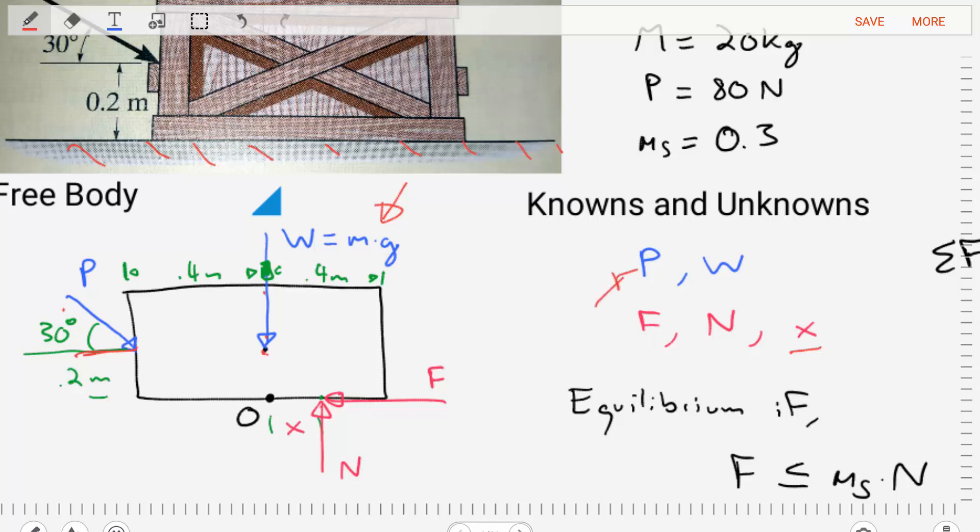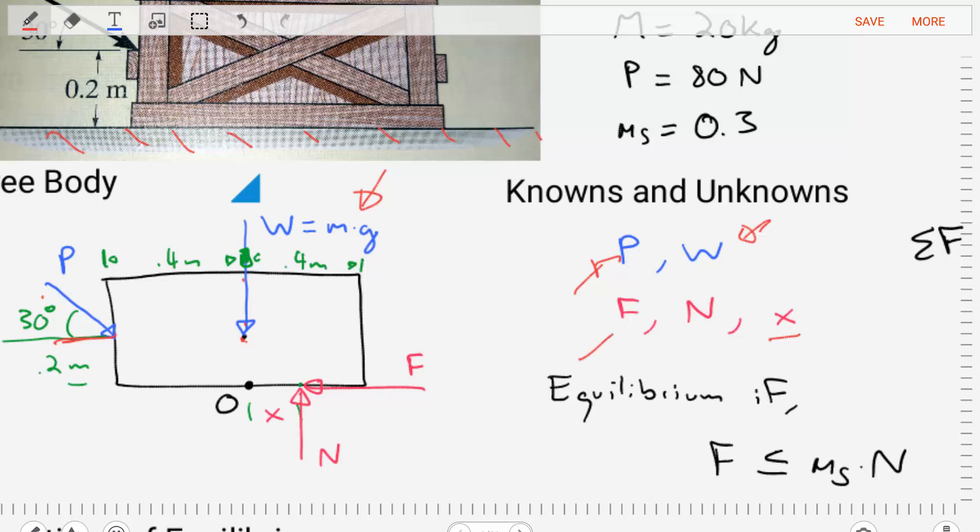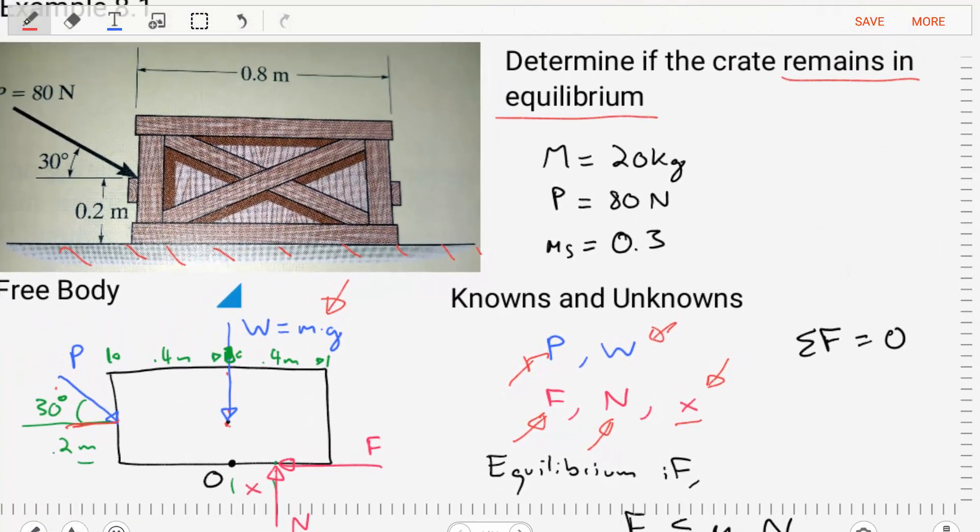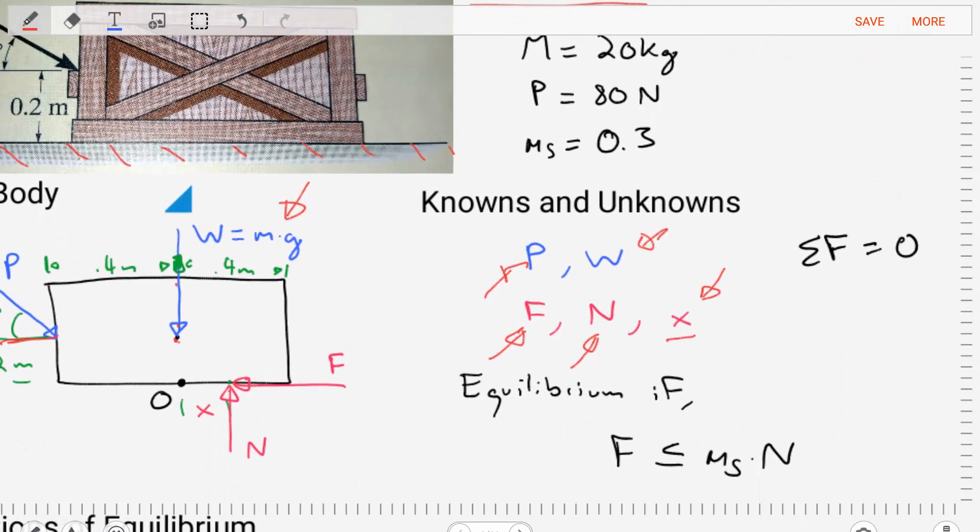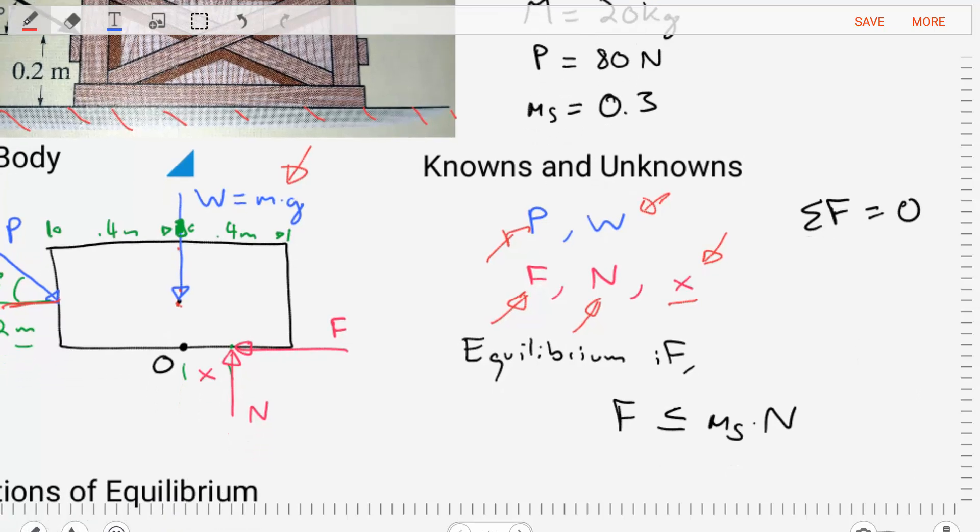Our knowns and unknowns in this problem. We know the force P, we know the weight. Our unknowns: the frictional force F, the normal force N, the distance x at which these forces are applied, and the actual thing we're asked to find to determine if this problem remains in equilibrium. For it to remain in equilibrium we must have a static friction case. That would be a case where the frictional force in the structure is less than or equal to the static coefficient of friction times the normal force. So all we need to do in solving this problem is apply our equations of equilibrium, solve for these unknowns and then check to see if the force we found is less than or equal to the static friction coefficient times N. Let's get started with that.